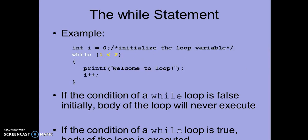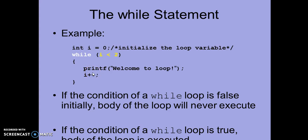Let's take an example. We have declared a variable i of integer type with value zero, and within the while loop we are using the test condition i is less than two. The body of the loop contains two statements: the first is printf('welcome to loop') and the second is i++. The ++ is an increment operator — it increases the value of i by one.